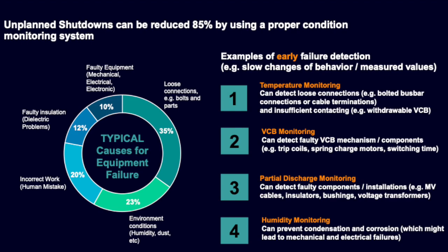Vacuum circuit breaker operation mechanism monitoring can detect faulty VCB mechanism and components. Partial discharge monitoring can detect gradual degradation of insulating properties for support insulators and bushings.